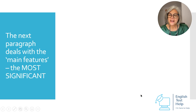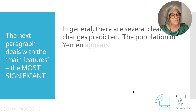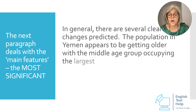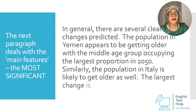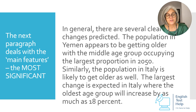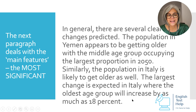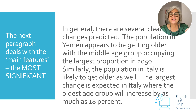In the next paragraph, you deal with the main features — the most obvious. In general, there are several clear changes predicted. The population in Yemen appears to be getting older, with the middle age group occupying the largest proportion in 2050. Similarly, the population in Italy is likely to get older as well, where the largest change is expected — the oldest age group will increase by as much as 18%. Remember, this is the second paragraph after the overview. These are the most obvious, the easiest to see differences.